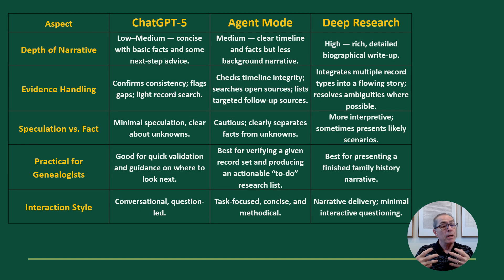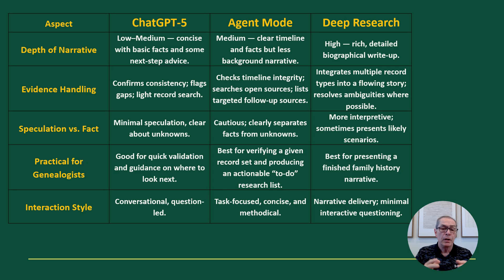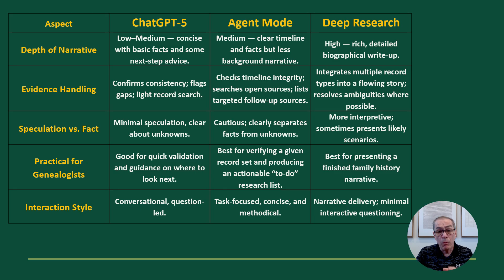Agent mode for genealogy is essentially giving you a bunch of pointers, while deep research gives you more of a narrative story. Looking at the details: depth is low for ChatGPT, medium for agent mode, and very deep for deep research. Evidence handling follows the same pattern — very low in ChatGPT, all the way to multiple researched sources. As for speculation versus fact: ChatGPT 5 has minimal speculation, whereas deep research speculated more, providing scenarios.